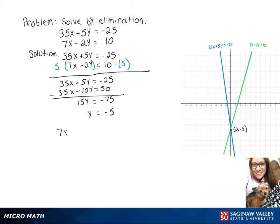Now we can take that negative 5 and plug it back into our equation, so we'll get 7x minus 2 times negative 5 equals 10. And then 7x plus 10 equals 10.